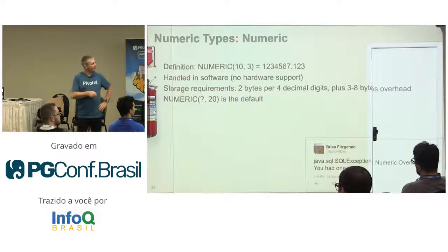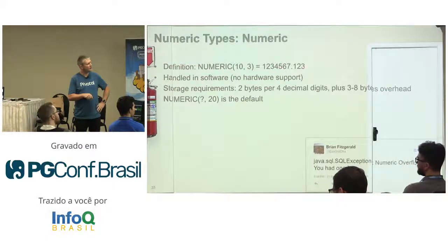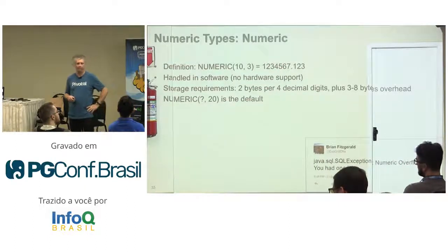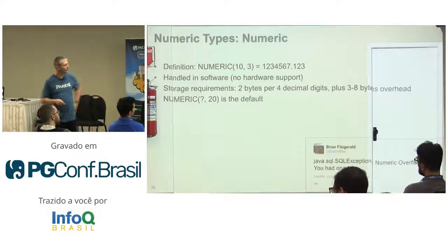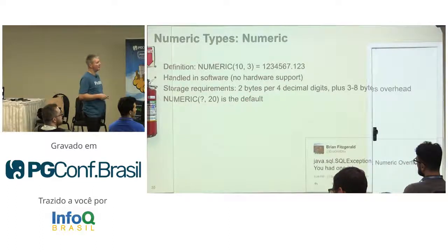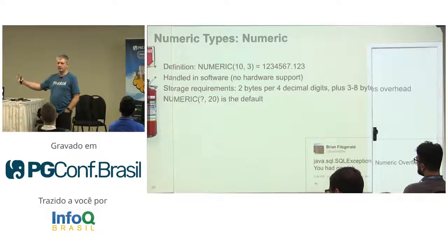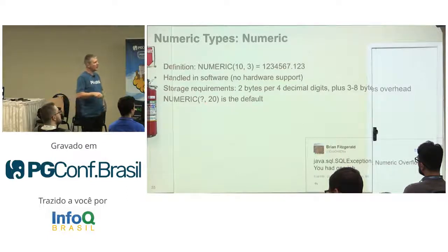The way you define a numeric type is: you say NUMERIC, then specify the total number of digits you need, then specify the number of digits after the decimal point. So NUMERIC(10, 3) means 7 digits before and 3 after the decimal point, making a total of 10. Numeric will round to 20 digits after the decimal point by default. We recently had a case where someone migrated data from Oracle and needed 40–50 digits after the point — you can specify that, but if you don't, it's 20 by default.